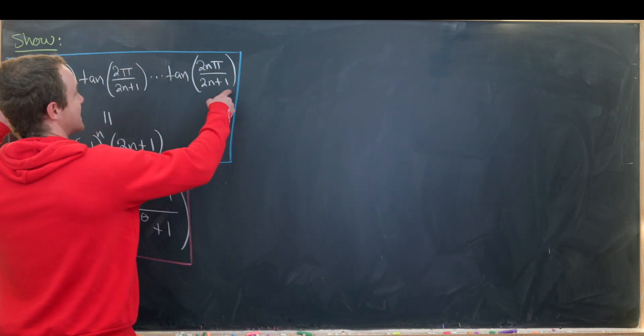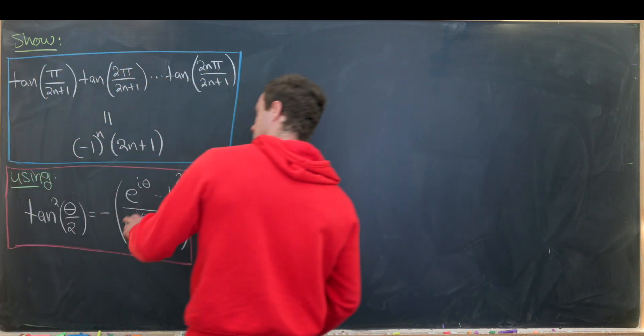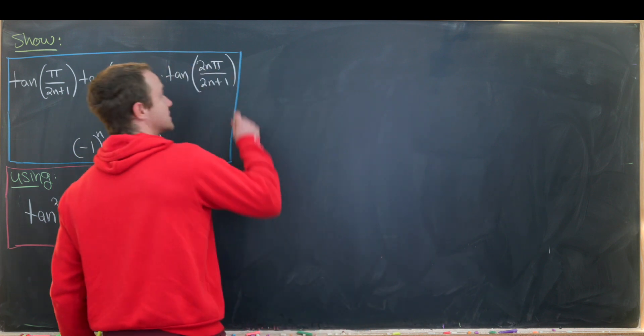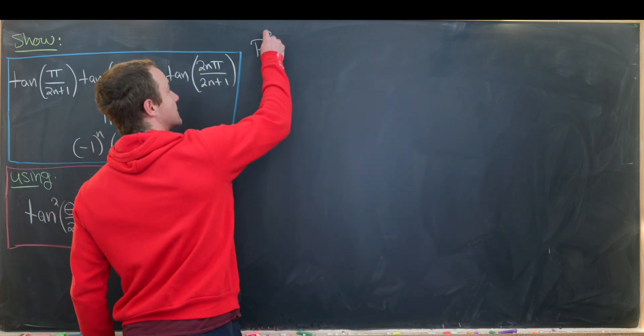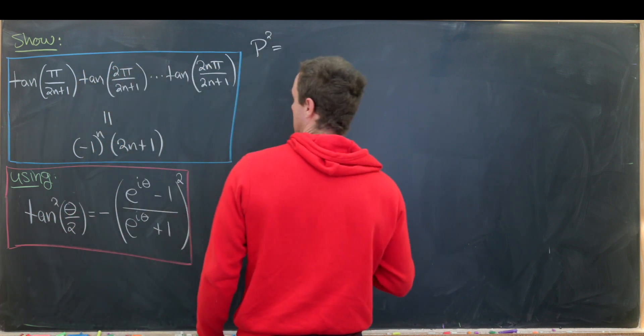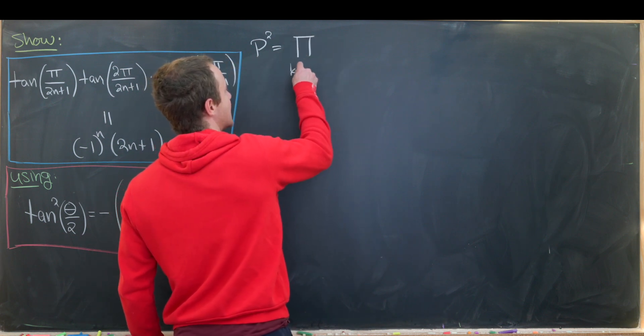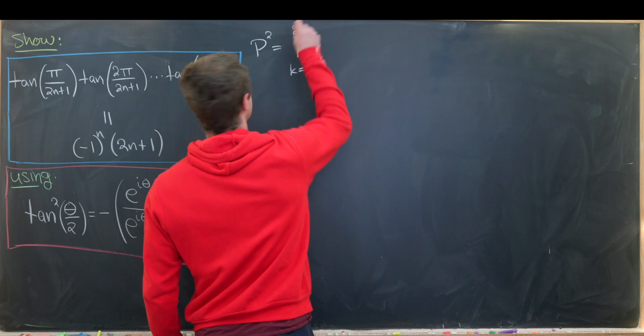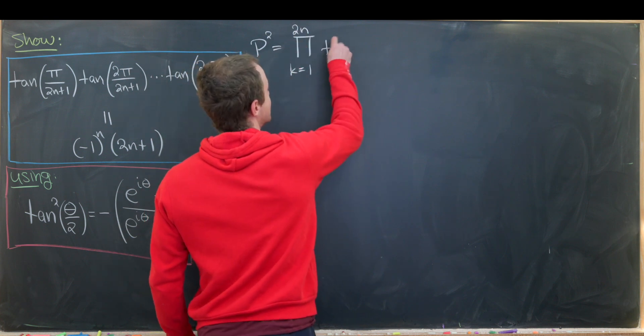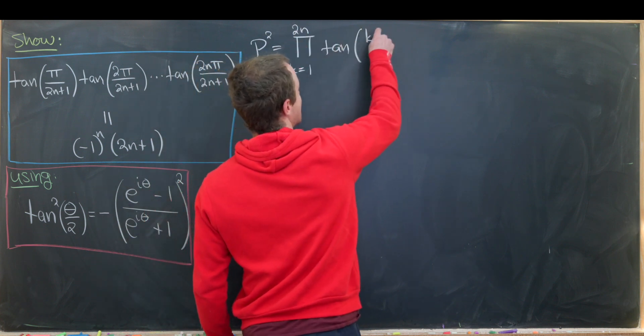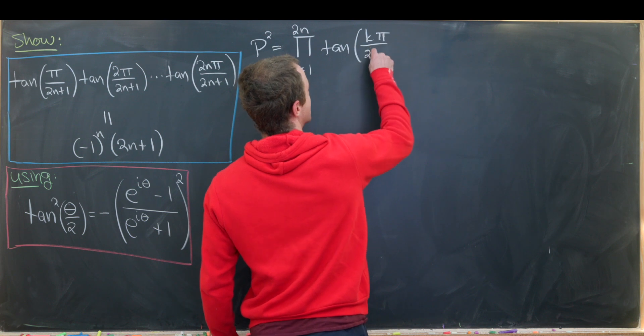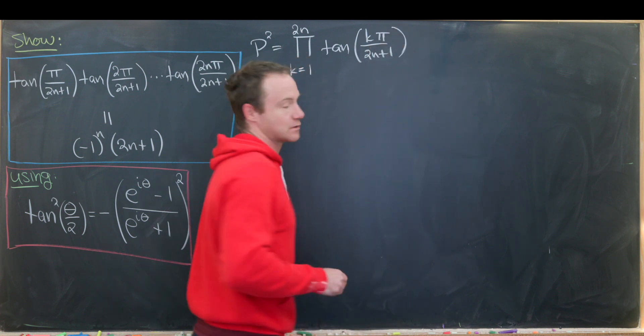Let's maybe call this product right here p and then since we're looking at tangent squared let's look at p squared. So let's write p squared as follows. This is going to be the product as k goes from 1 up to 2n of the tangent of k times π over 2n plus 1.